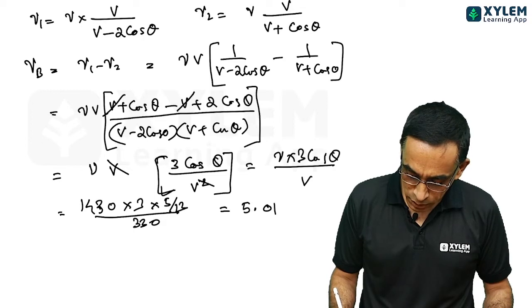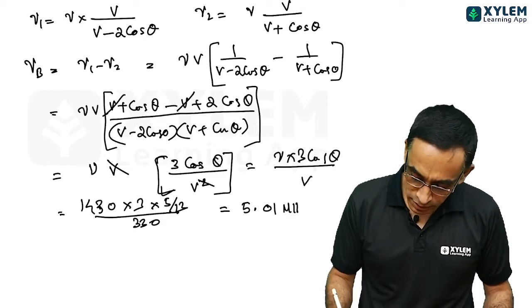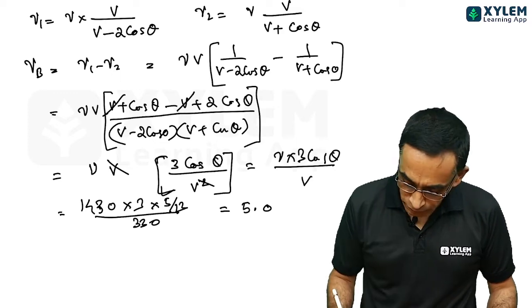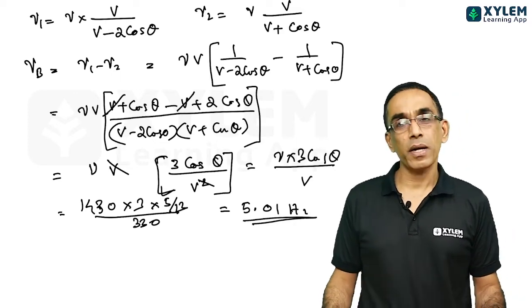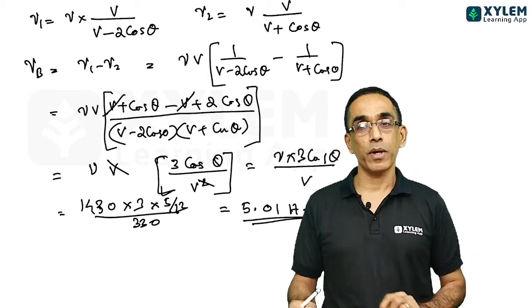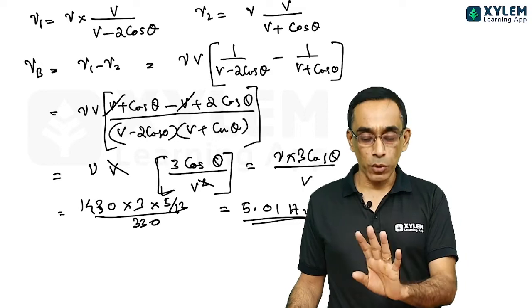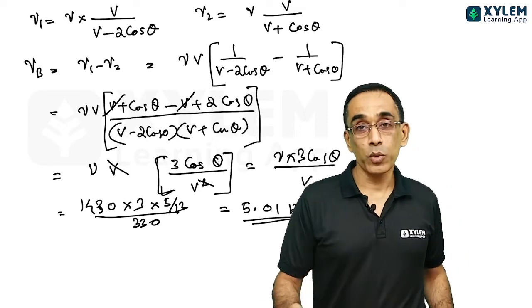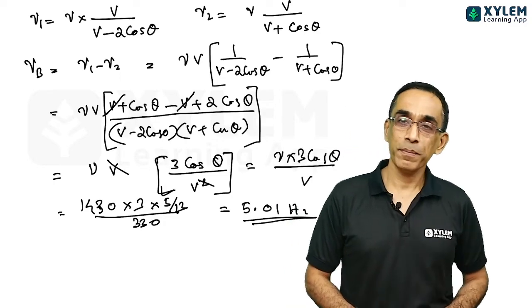And the answer should be coming around 5.01. Check the calculation 5.01, sorry 5.01 hertz. It should become 5.01 hertz. This question I would say the calculation part is little complex to get this 5.01. But I think you will get the mark for 5, 5.0 etcetera. So this is how you do this. Calculation part is a little complex. Other than that, there is no problem. Thank you.